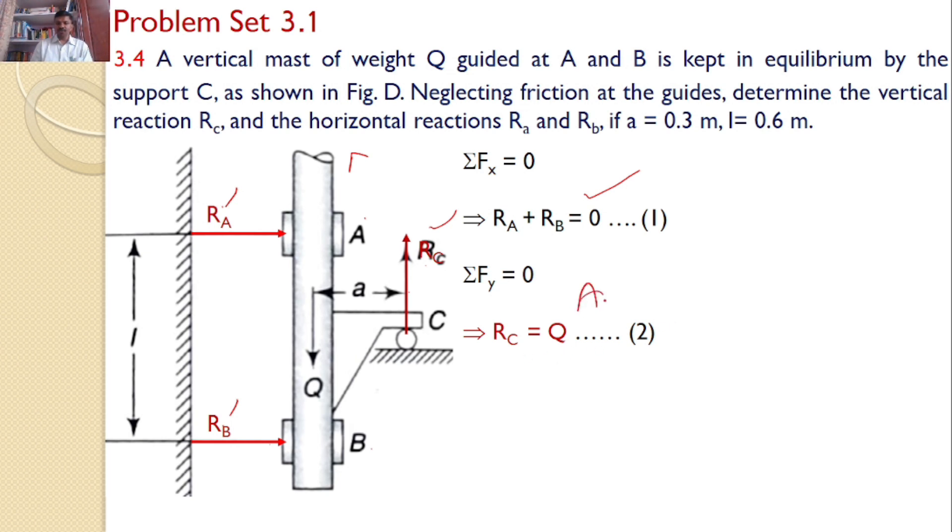So now to calculate the other two reactions, Ra and Rb, let us consider the moments about any point in the system. I will consider the moments about point A. Ra is passing through point A, hence that will not introduce any moment. Rb will introduce a moment.